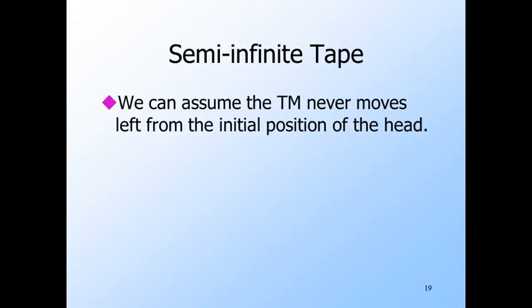We're now going to start exploring restrictions of the original Turing machine model that are powerful enough to simulate the original model, and therefore also define exactly the recursively enumerable languages. Our first restriction is that we can assume the tape is infinite to the right of the input only. Tape squares to the left of where the input is placed do not exist and may not be used. The Turing machine halts if it tries to move left into a non-existent square, but it is also possible to design a Turing machine so it never makes that mistake.